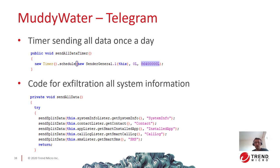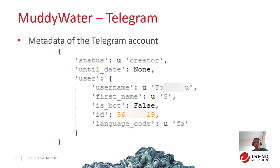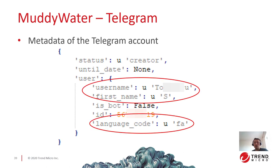The function is called sendAllData and you can see which information is collected: system info, contacts, installed applications, call logs, and SMSs. For the Telegram channel, we can display metadata about the creator — the username and also the language used. In this case, you can see the language code FA, which stands for Farsi. This can give us a hint about where the threat actor might be based, though of course this information could be fake.